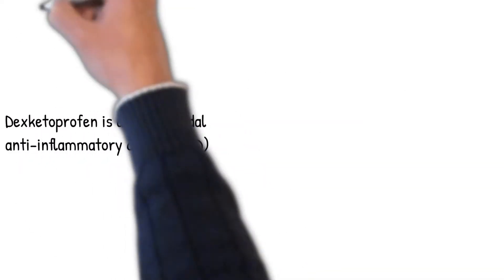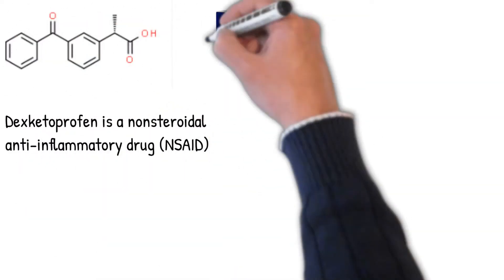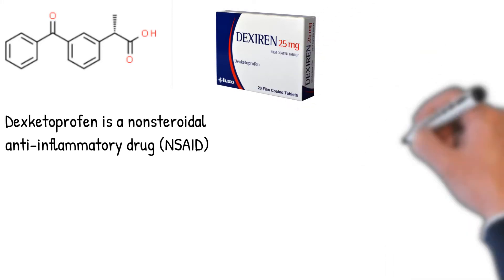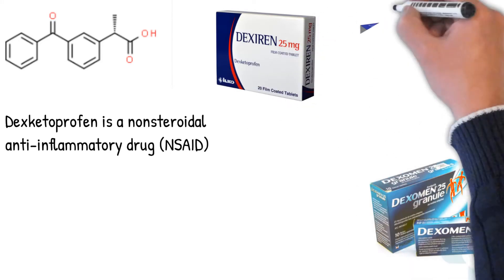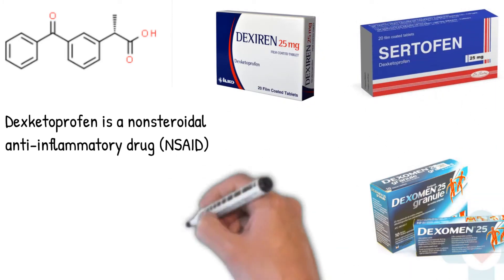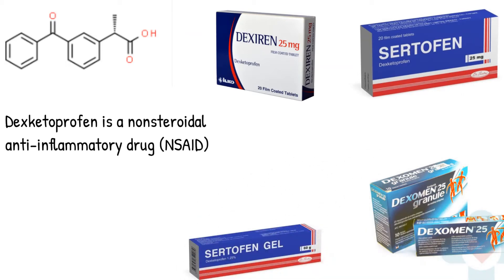Dexketoprofen is a non-steroidal anti-inflammatory drug (NSAID). It is manufactured by Menarini under the trade names Keral, Dexalgen, Enantium, and Trometamol in the UK. In many countries it is an over-the-counter drug.